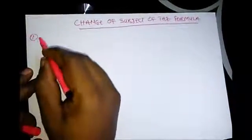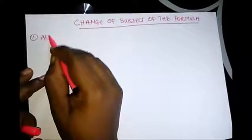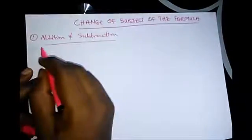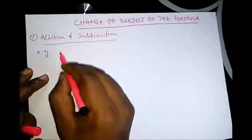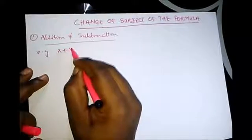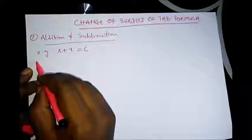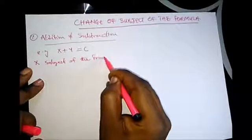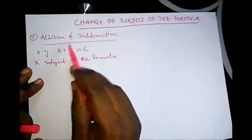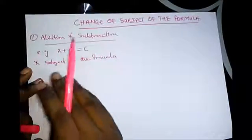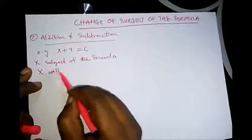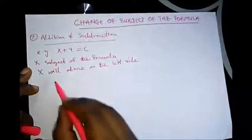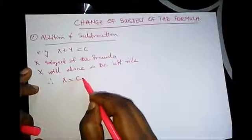Let's take the first operation: operations involving addition and subtraction. For example, if we have x plus y equal to c, to make x the subject of the formula, we simply take y to the other side — the right-hand side — leaving x alone on the left side. Therefore we have x equal to c minus y.